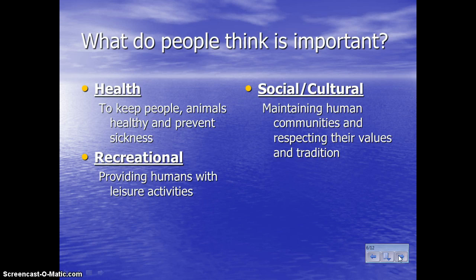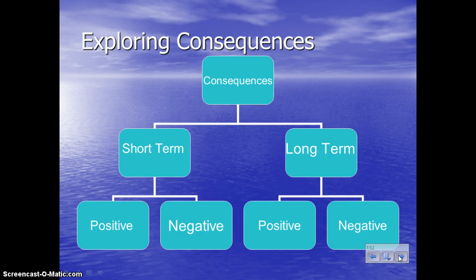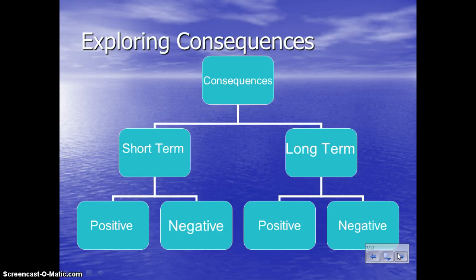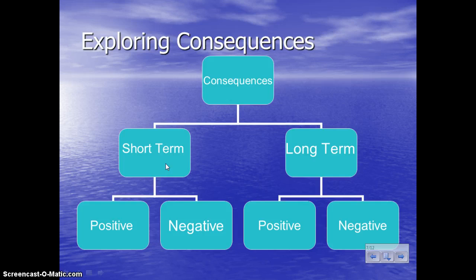Now that we've recorded the values and what they mean, we move on to the next part of the decision-making model: looking at consequences to decide what we might choose to do. Please stop the presentation and copy this chart into your notes. Consequences happen after or as a result of a decision you've made. Short-term consequences happen within days or months; long-term consequences involve things that take many months or even years to happen.